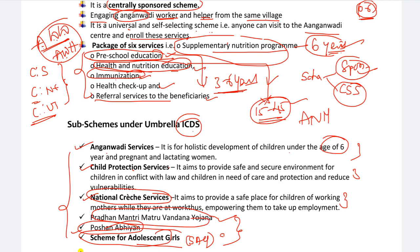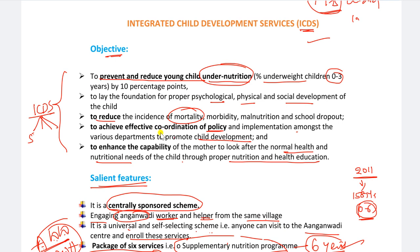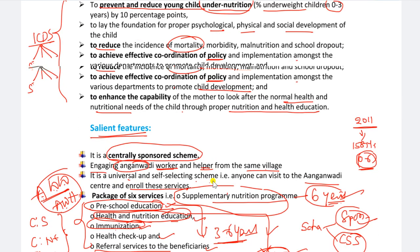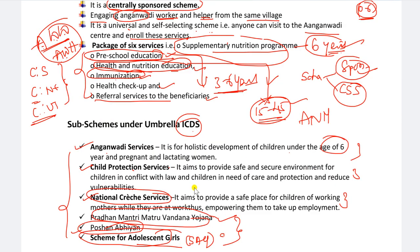Because these three come under the umbrella program of Integrated Child Development Scheme which was implemented on October 2nd, 1975. This is the first scheme in the Ministry of Women and Child Development. Hope you understand this concept. All points clear kaadha - centrally sponsored scheme. It is a centrally sponsored scheme - not a central sector scheme. In the next class, I will discuss each one - Poshan Abhiyan in one class, Pradhan Mantri Maatru Vandana Yojana, and Scheme for Adolescent Girls - separate videos chestunam because these three are very important.